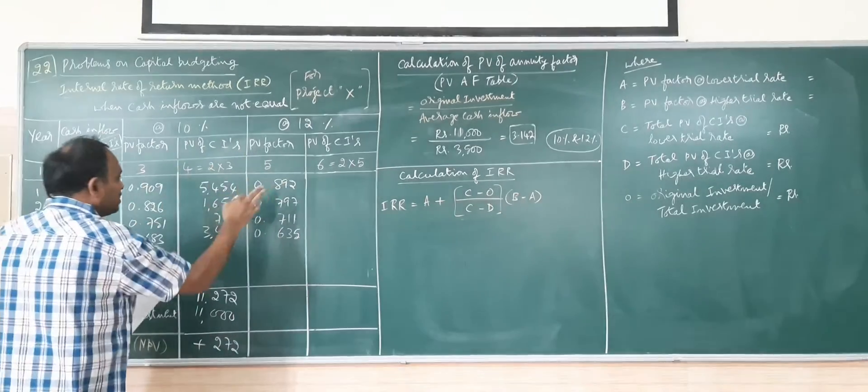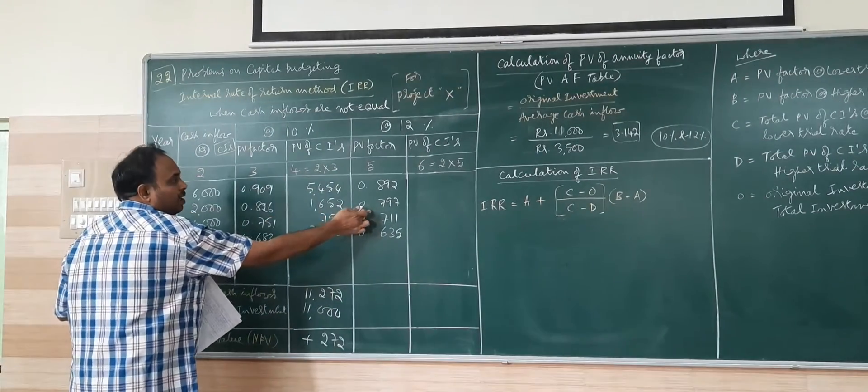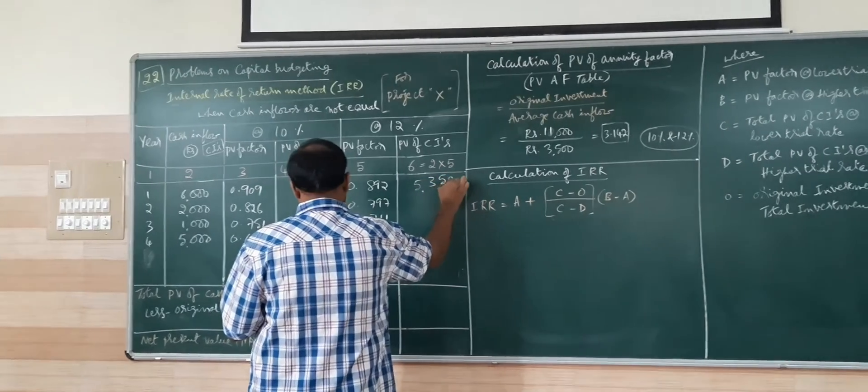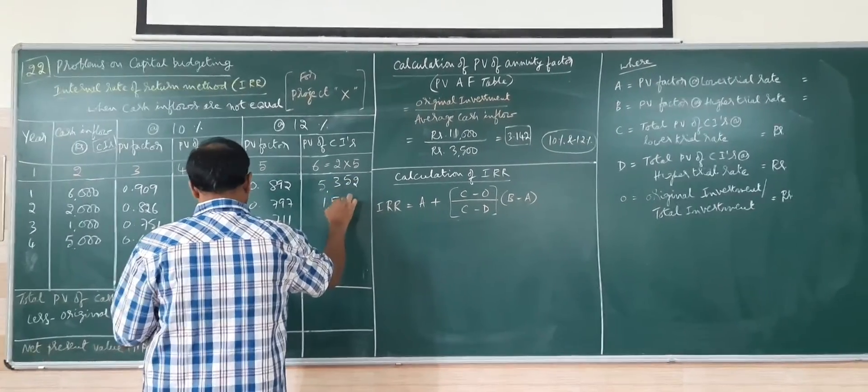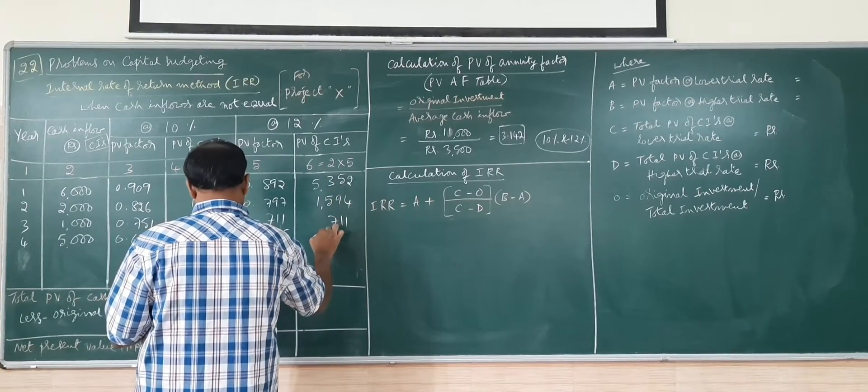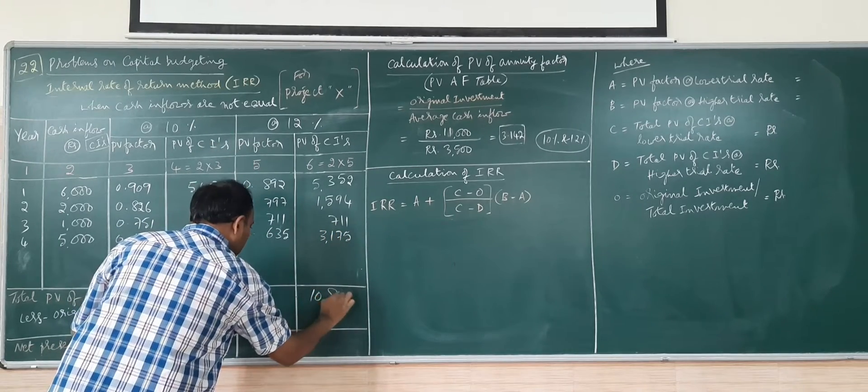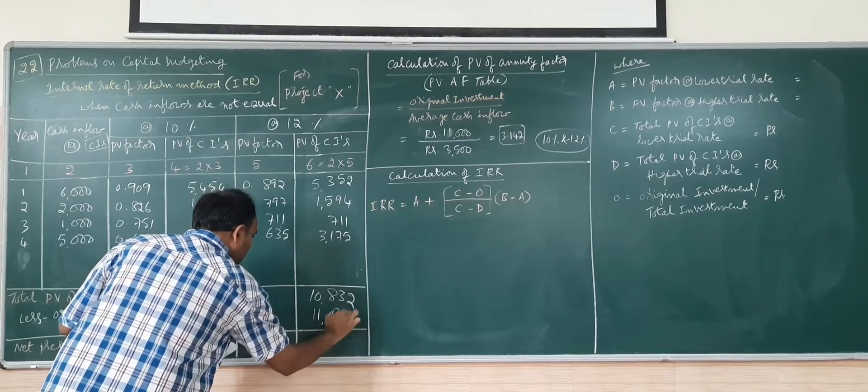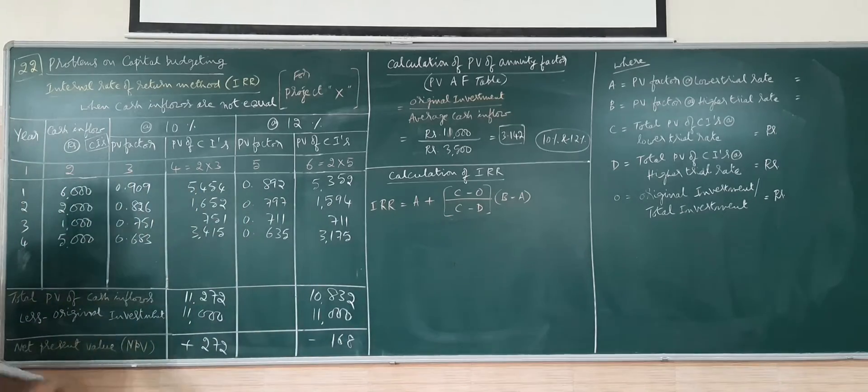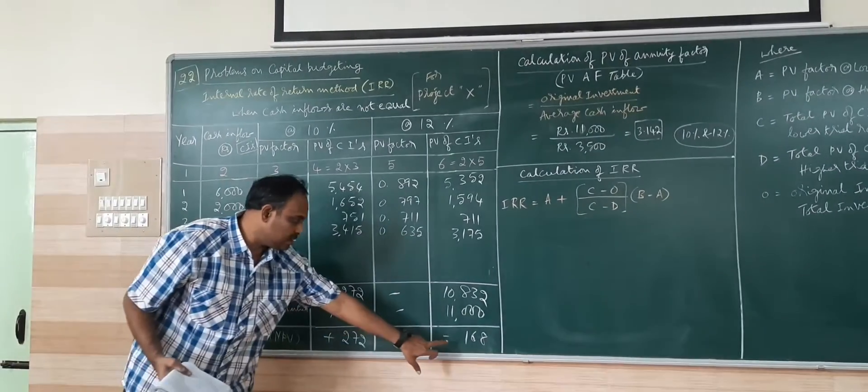I will get into the 12 percent. 6000 into PV factor at 12 percent, 2000 into PV factor at 12 percent. 5352, 1594, 711, 3175. If I add, I get 10,832. Less the original investment 11,000. You can see here that one NPV is plus and another NPV is minus.